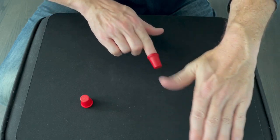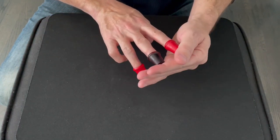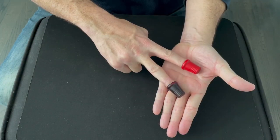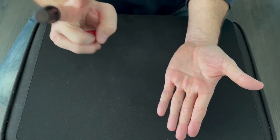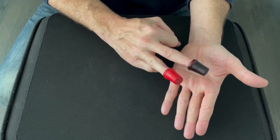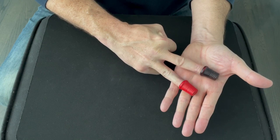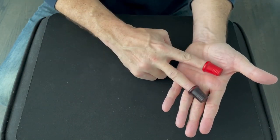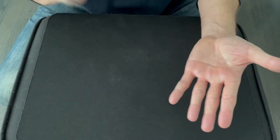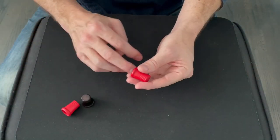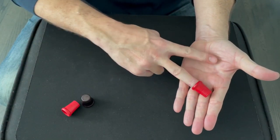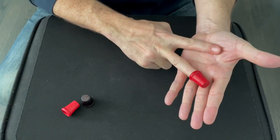To do the jumping thimbles, you're going to put one on each of your first three fingers like this. Now display your fingers, and then as you lift them up, you're going to curl your index finger back, put your ring finger out, and then as you lift up, switch them back again, and it'll appear as though the thimbles are just jumping from finger to finger. You could also do this same move with a single thimble on your middle finger, making it look like it's jumping back and forth.